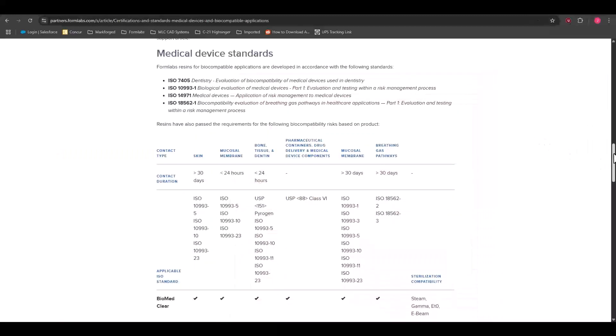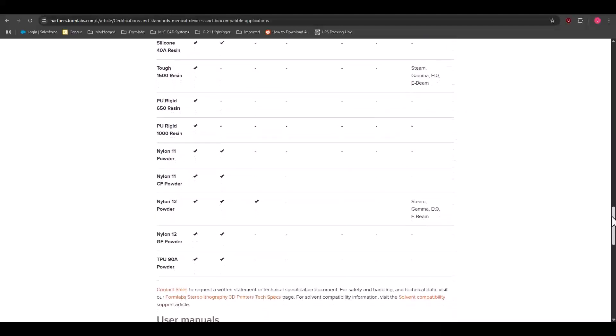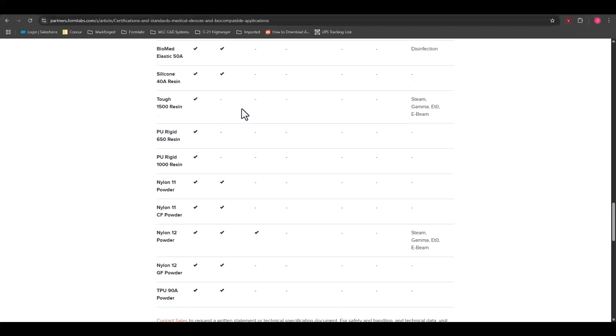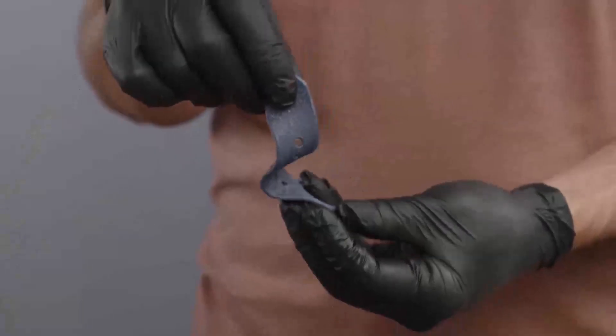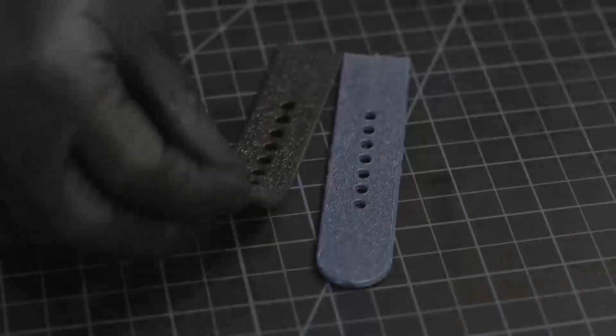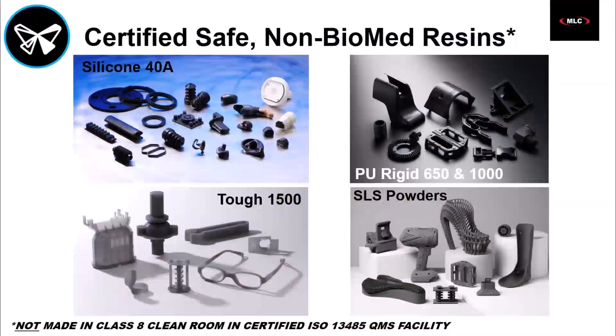Now, if we scroll down a little further in this table, you'll notice there are some non-biomed resins and even SLS powders listed here. These materials have also undergone in past relevant biocompatibility risk certifications, mostly in response to customer requests, because materials like silicone 40A are often used to make consumer wearables, and Nylon 12, for instance, is used to make prosthetics. Just note that these non-biomed materials are not made in the ISO 13485 certified facility and Class 8 clean room like the biomed resins are.